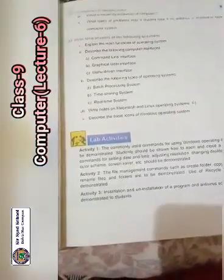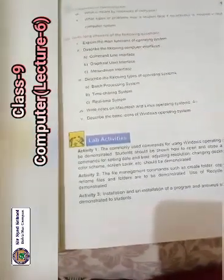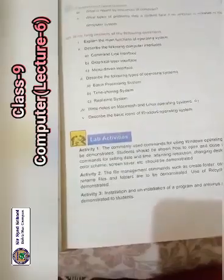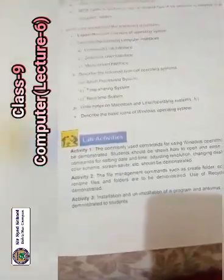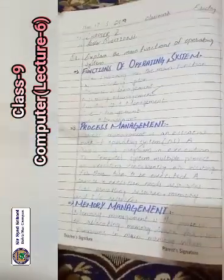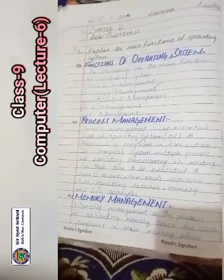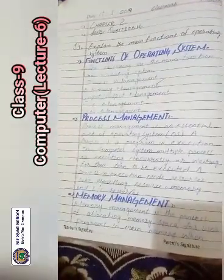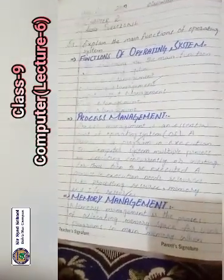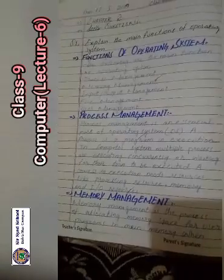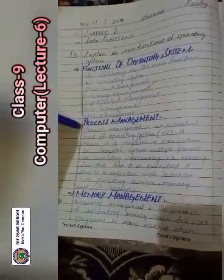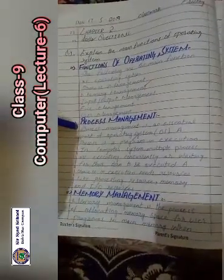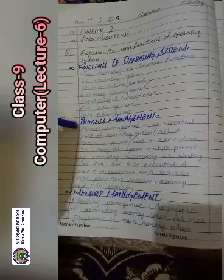Question number 3: explain the main functions of an operating system. The main functions of an operating system are: process management, memory management, input/output management, file management, and user management. Process management is an essential part of the operating system. A process is a program in execution in a computer system.